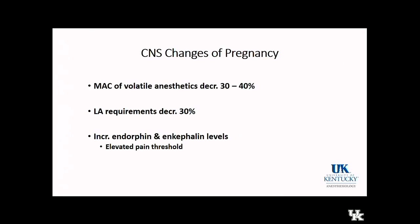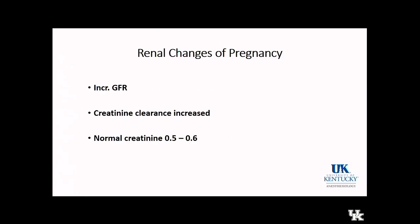Endorphin and enkephalin levels are elevated in pregnancy, resulting in an elevated pain threshold overall in the pregnant patient compared to the non-pregnant patient. In terms of renal changes, there is a significant rise in GFR and creatinine clearance increases, which is why a normal creatinine in a pregnant patient is about 0.5 to 0.6. A preeclamptic patient with a creatinine of 1.0 — which may seem normal — actually indicates renal dysfunction due to preeclampsia.